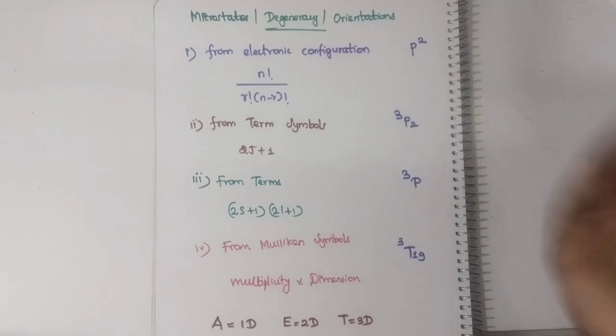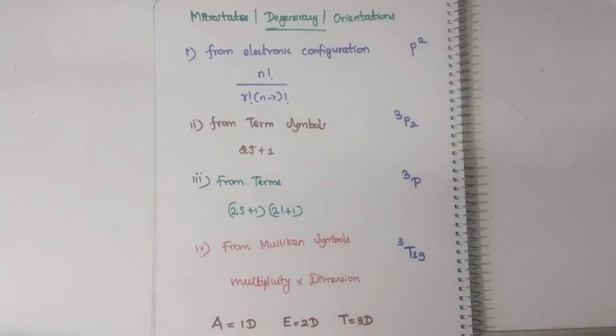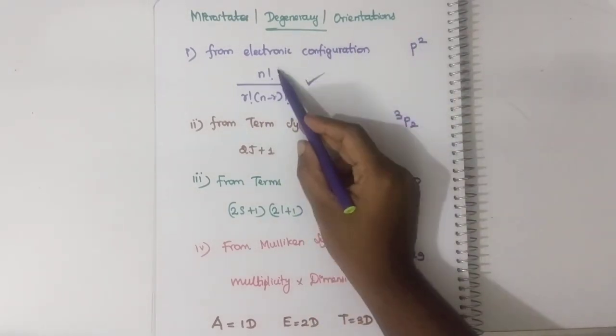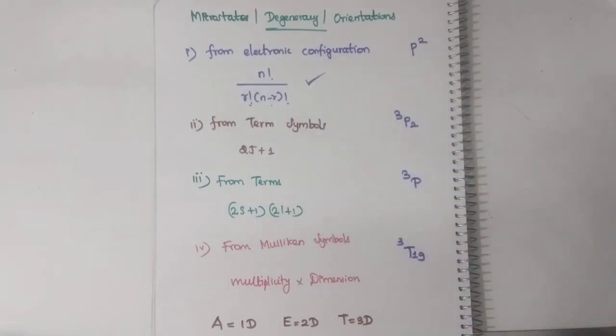So if they have given electronic configuration, what will you do to calculate the microstate? This is the formula: N factorial divided by R factorial into N minus R factorial.